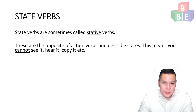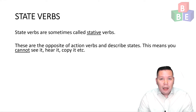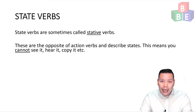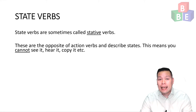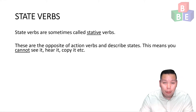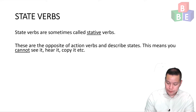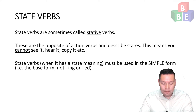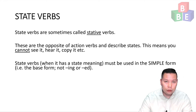Now let's talk about state verbs. These are a little bit more complicated. State verbs are sometimes called stative verbs. They are the opposite of action verbs — they cannot be seen, they cannot be heard, you cannot copy them. They're kind of invisible or abstract. State verbs, when used with a state meaning, must be used in the simple form — the base form, not the -ing or -ed form.